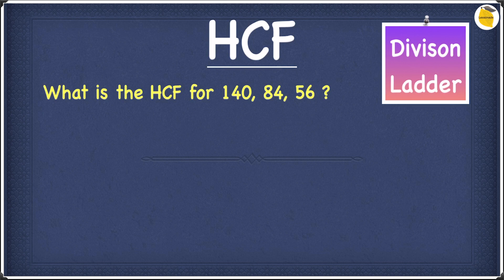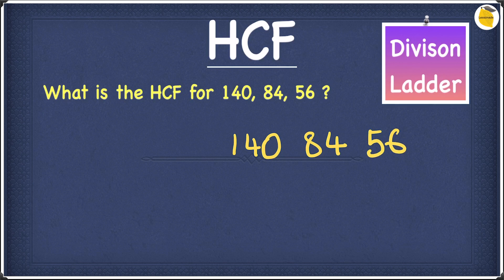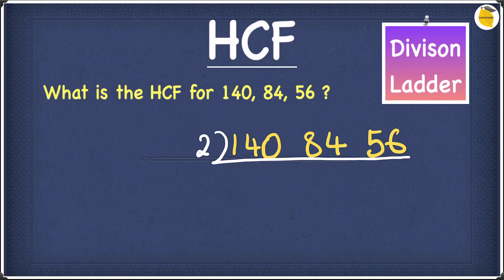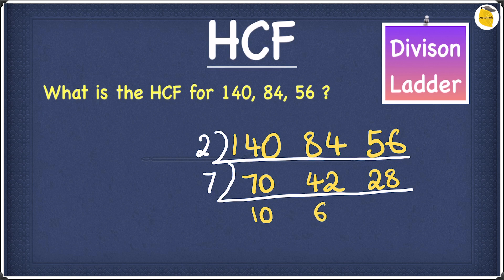Let's look at this example: what is the HCF for 140, 84, and 56? We're going to solve this using the division ladder. We write 140, 84, and 56. A common factor between these three numbers is 2: 2 goes into 140 seventy times, into 84 forty-two times, and into 56 twenty-eight times. The next common factor between 70, 42, and 28 is 7: 7 goes into 70 ten times, into 42 six times, and into 28 four times.